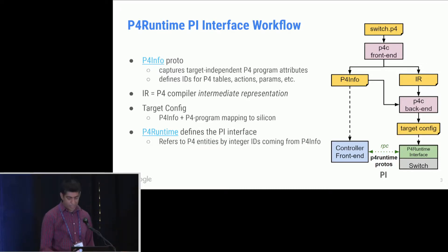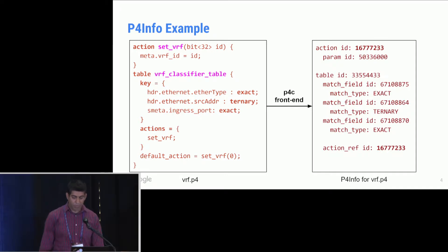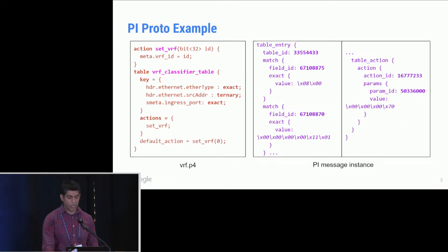So let's take a look at an example. On the left here is a P4 program snippet showing a VRF classifier implementation, fairly standard stuff. On the right is the P4 info that would be generated by the P4C compiler. And what you see here is all the attributes of the P4 program on the left with IDs generated for various fields as well as other metadata such as the match type. And what we do next in our P4 runtime messages is to use this information.